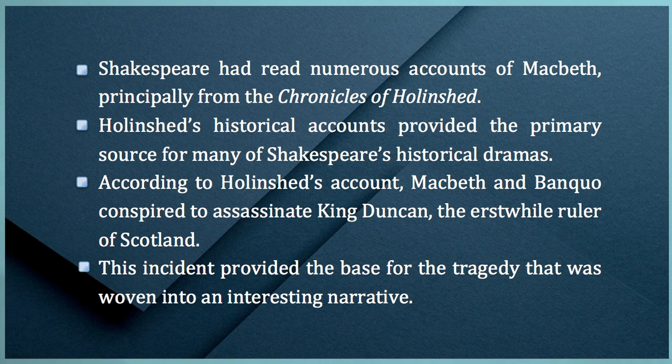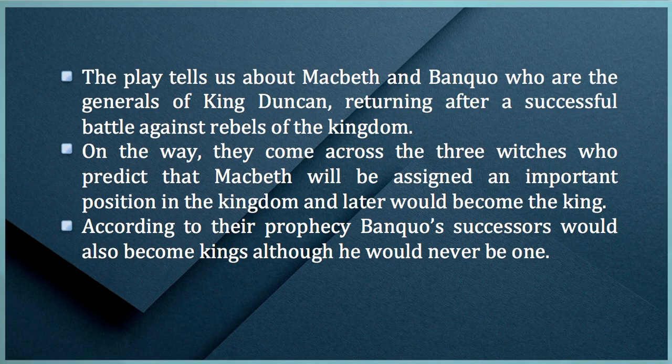Holinshed's historical accounts provided the primary source for many of Shakespeare's historical dramas. According to Holinshed's account, Macbeth and Banco conspired to assassinate King Duncan, the erstwhile ruler of Scotland. This incident provided the base for the tragedy that was woven into an interesting narrative. The play tells us about Macbeth and Banco, who are the generals of King Duncan, returning after a successful battle against rebels of the kingdom. On the way, they came across the three witches who predict that Macbeth will be assigned an important position in the kingdom and later become the king. According to their prophecy, Banco's successors will also become kings, although he would never be one himself.